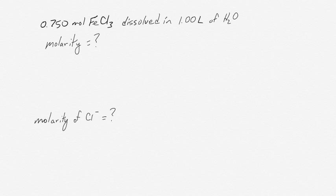Our second example is in two parts. We have 0.750 moles of FeCl3 dissolved in one liter of water, and we want to know what is the molarity of the iron 3 chloride. What we do is exactly the same as the last example. We take the number of moles, and we divide it by the number of liters.